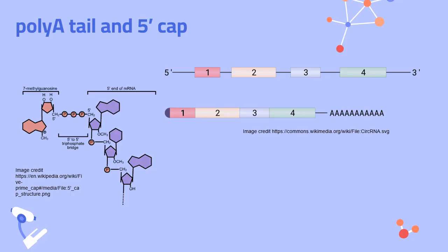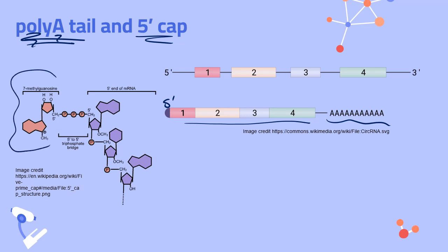One last note on mRNA processing before we discuss translation: we add a poly-A tail — literally many adenines — to the 3 prime end. Its job is to protect the important coding regions of the messenger RNA from being degraded by enzymes in the cytoplasm. We also add a 5 prime cap: a special guanine nucleotide with an extra methyl group and extra phosphate groups added to the 5 prime end. This also stabilizes and protects the messenger RNA strand so that we can translate it into a polypeptide before it falls apart.